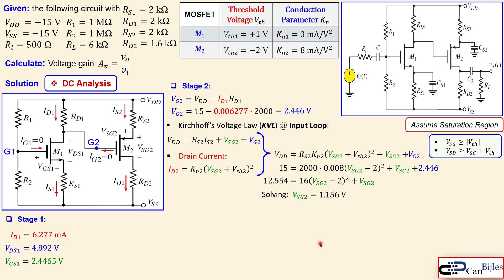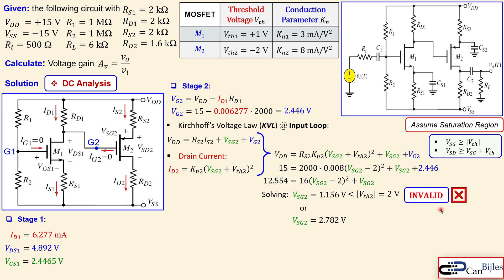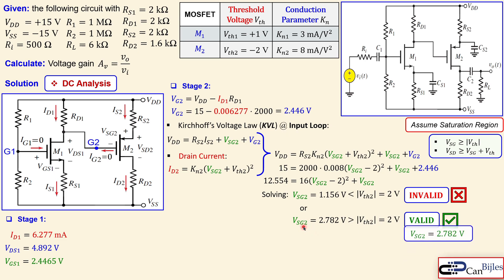Solving the quadratic yields two solutions: VSG2 = 1.156 V and VSG2 = 2.782 V. For saturation of the P-channel, we need VSG2 ≥ |Vth2|. The first solution is less than the threshold voltage magnitude and is therefore invalid. The second solution, 2.782 V, is larger than the threshold voltage, making it the valid solution. So VSG2 = 2.782 V for stage two.